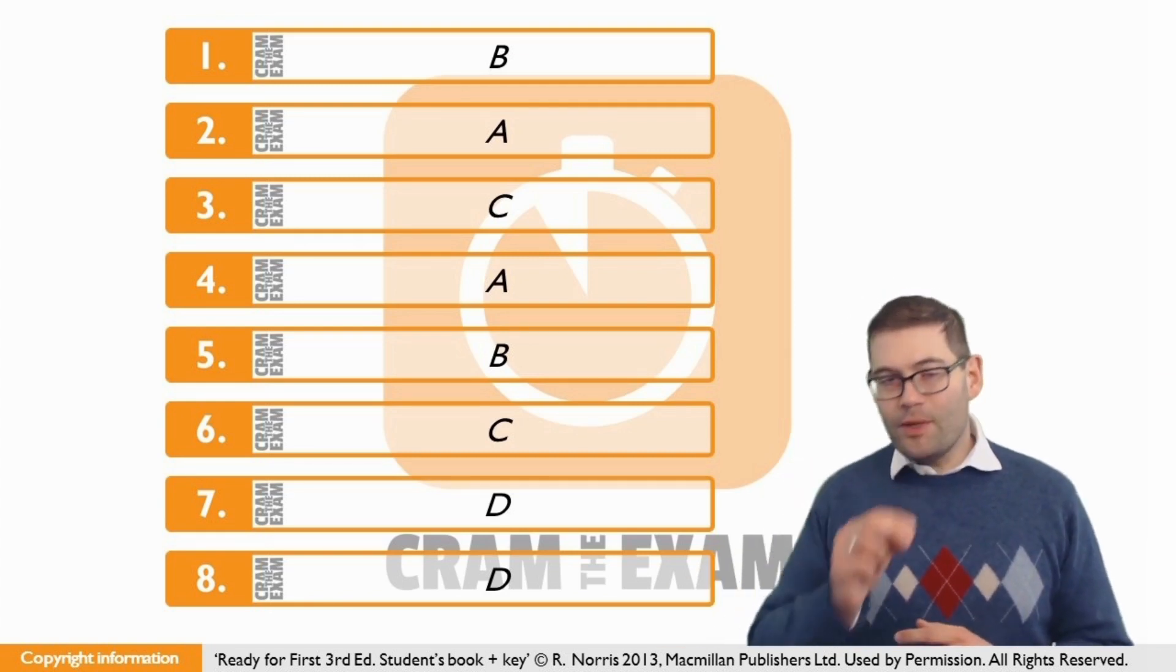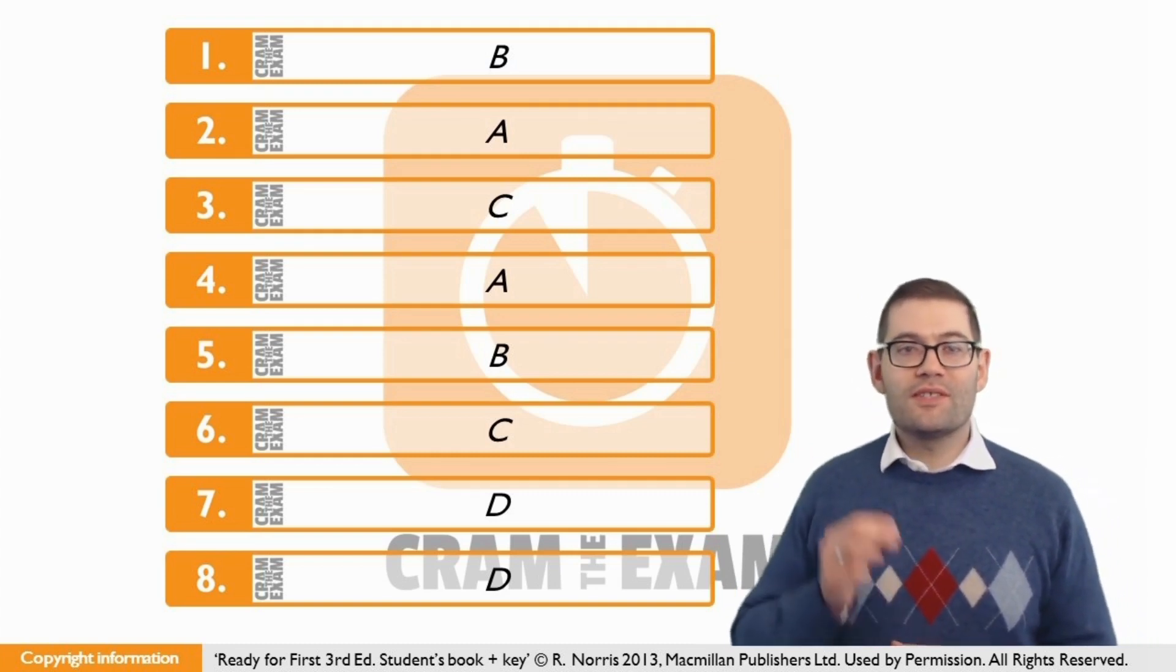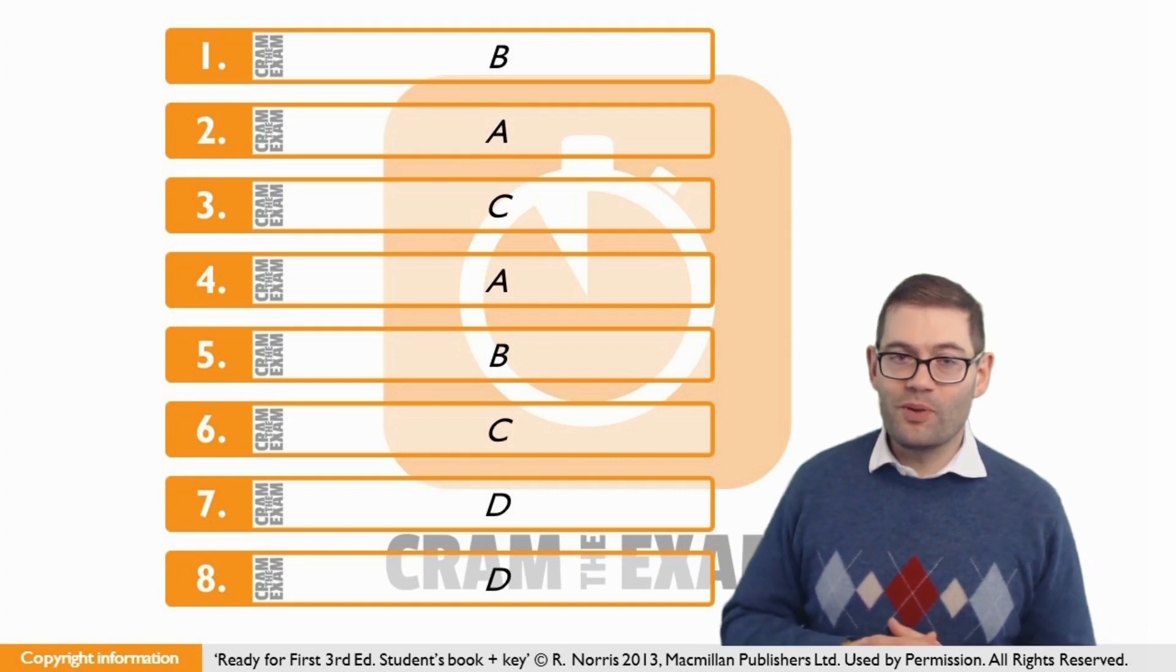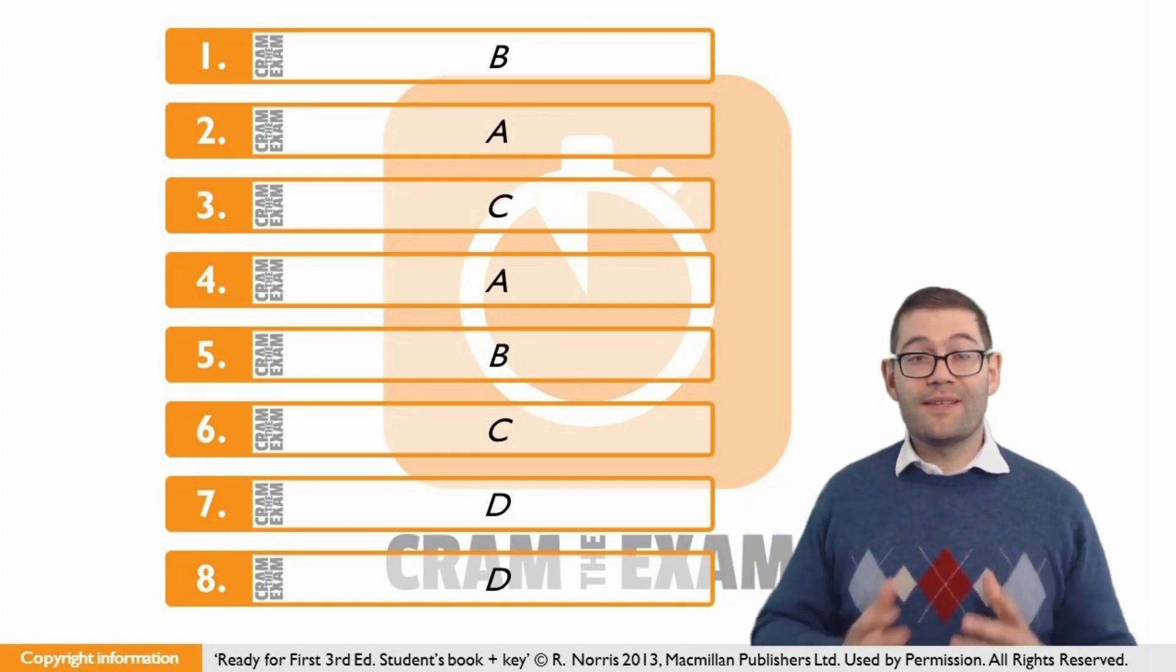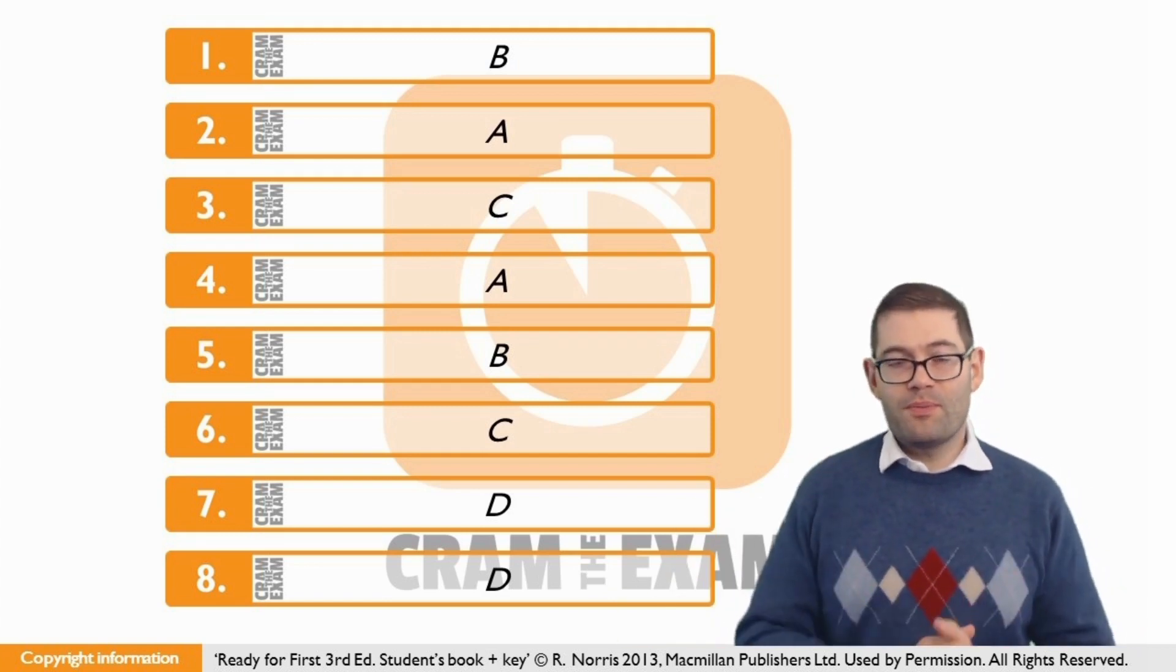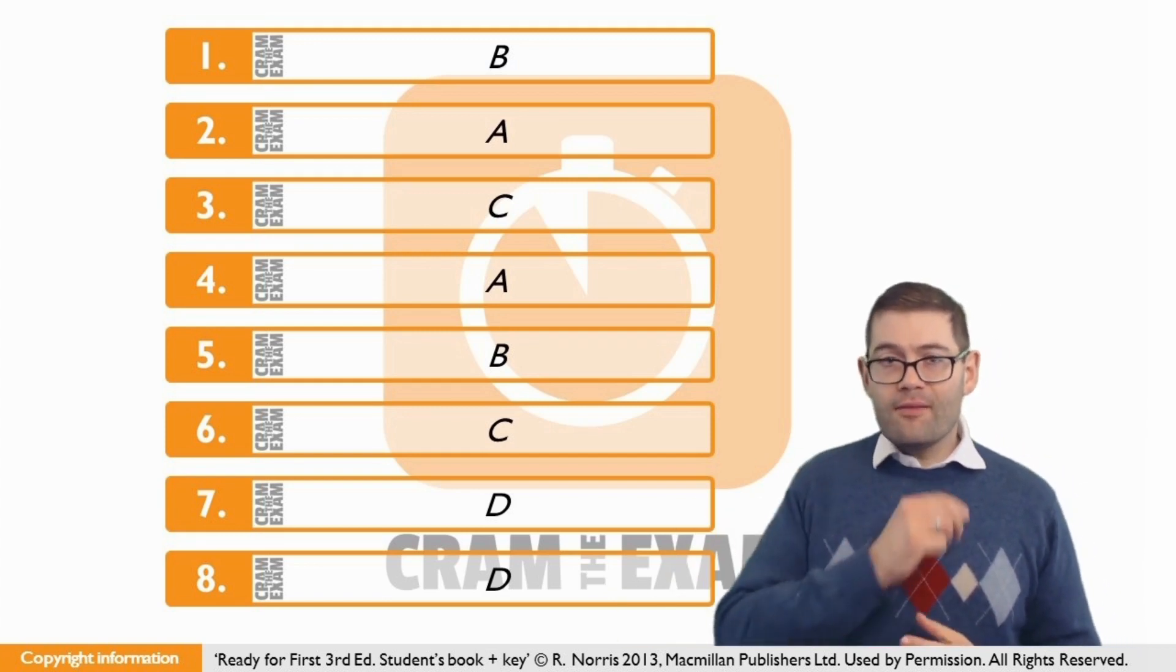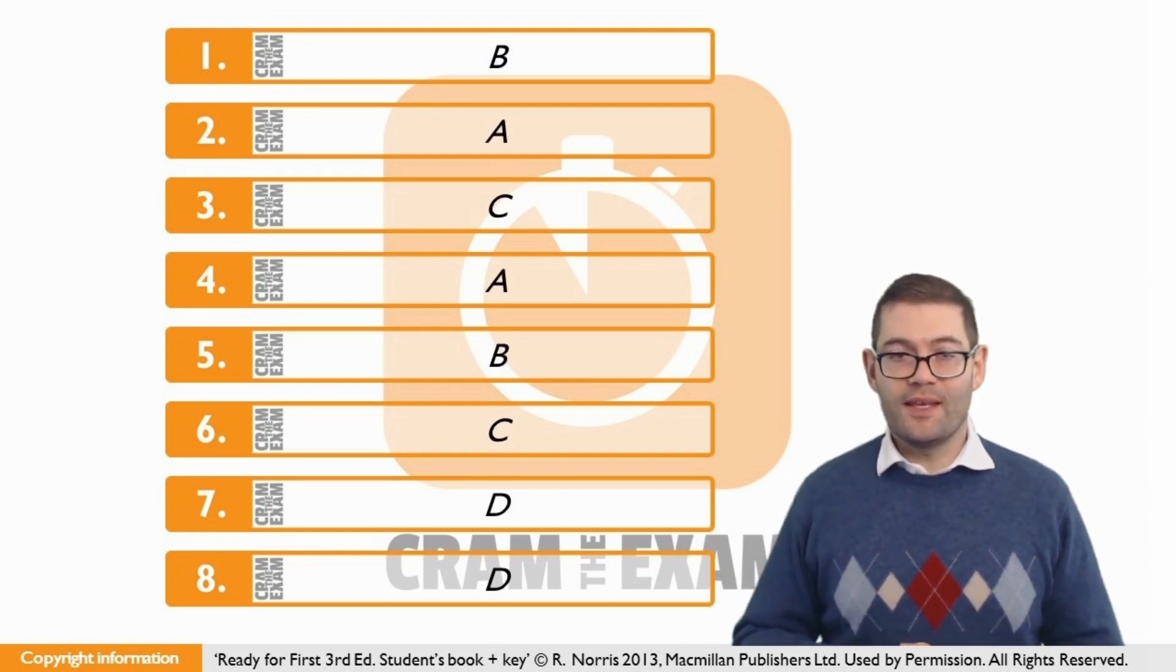For question number seven, the key word is the preposition which follows the gap. That one preposition tells us that there can only be one possible answer. It's not A because you would have to introduce a structure of something like 'dedicating itself to something.' B and C both need the preposition 'on.' The only answer that collocates with the preposition 'in' is specializing in something.